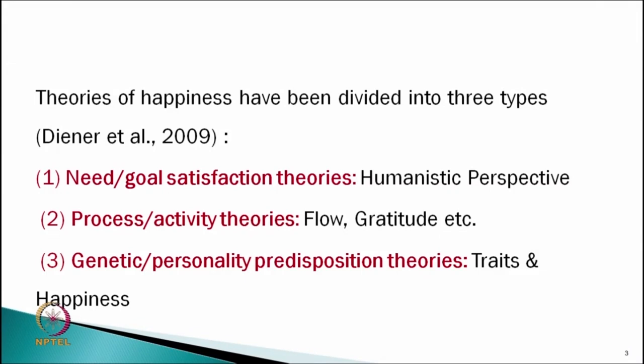Other scholars focus more on process and activity theories. For example, they say that when we are doing certain activities, during that process we are happier — for example, during flow, which is an activity in which we involve fully, or gratitude and thanksgiving activities. A third group of scholars focused more on genetic and personality disposition theories, saying that happiness is a trait and there are various traits positively or negatively correlated with happiness.